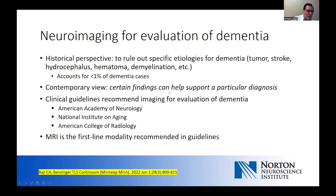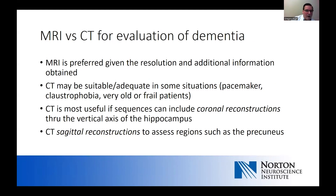Most clinical guidelines around the world do recommend imaging at least once in the course of a person's evaluation for dementia. Clearly, MRI is the first-line modality recommended in most guidelines. MRI gives substantially greater resolution of brain structures, and there's much more information that can be obtained about vascular changes. So it really is the workhorse, the first-line study for the majority of patients.